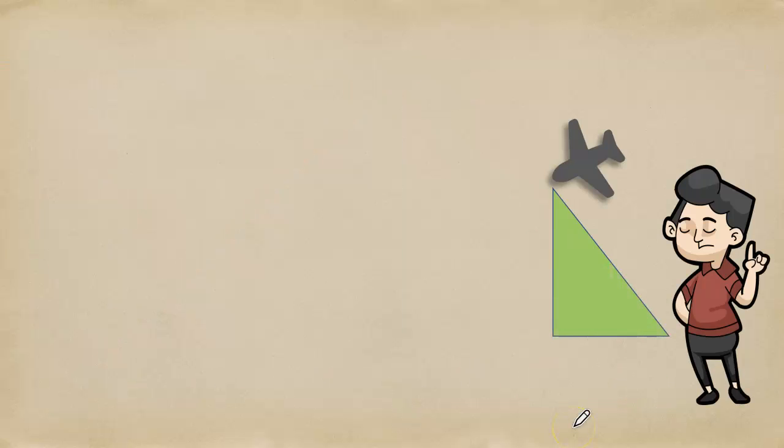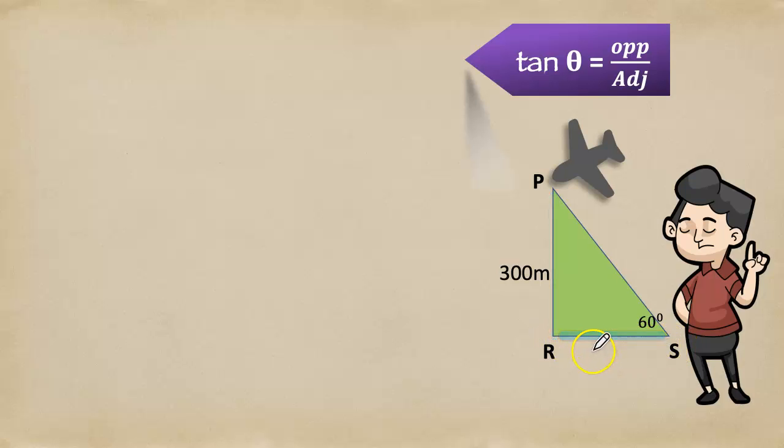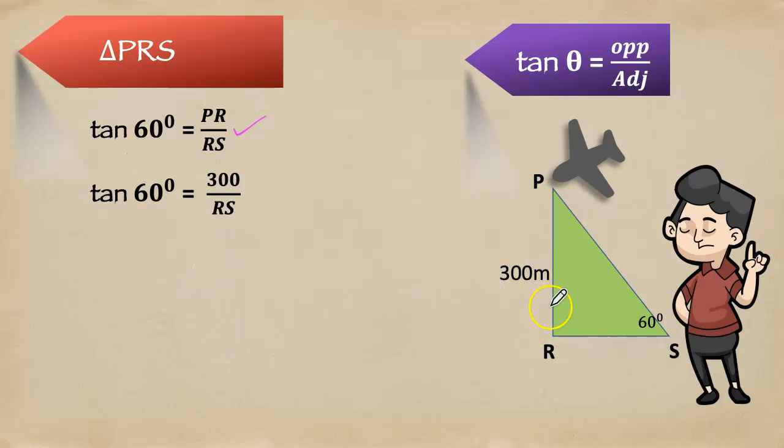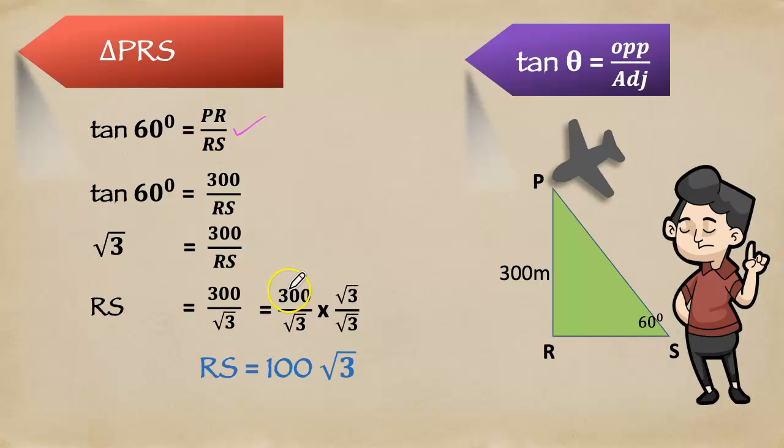First triangle, the angle of elevation 60 degree. So, opposite side of 60 degree is 300m and adjacent side is RS. We can use tan theta equals opposite by adjacent. So, triangle PRS, tan 60 degree equals PR by RS. Tan 60 degree equals 300 by RS. The value of tan 60 degree is root 3 equals 300 by RS. Therefore, RS equals 300 by root 3, rationalizing the denominator. Root 3 into root 3 is 3 and 300 we can cancel. So, we get 100 root 3 meter.